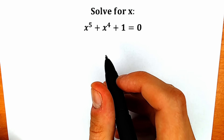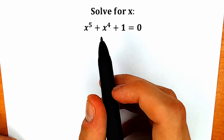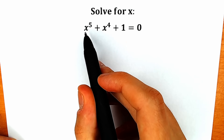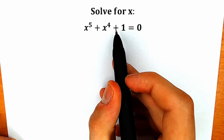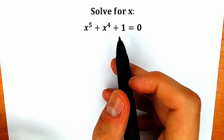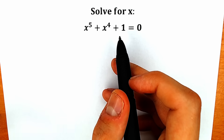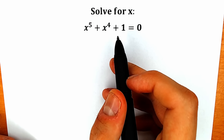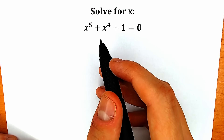Hello everyone! Today we have a very interesting question from Math Olympiad. We have x to the fifth power plus x to the fourth power plus one equal to zero, and we need to solve this question. If you have your solution you can write it down into the comment section and then we will check our answers.